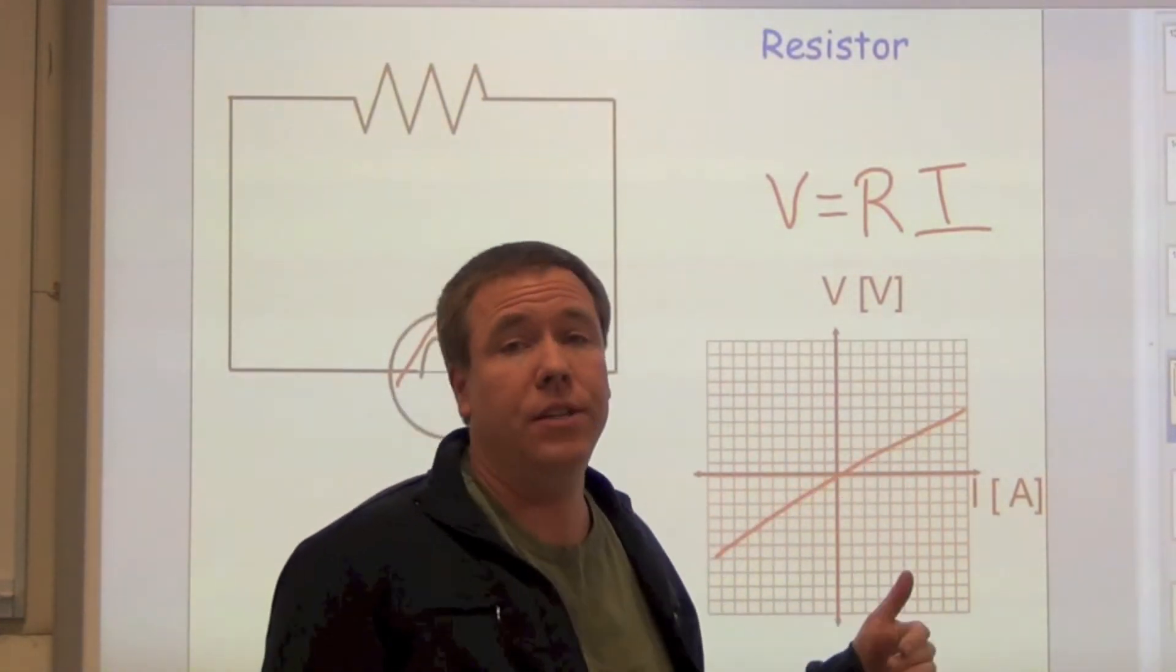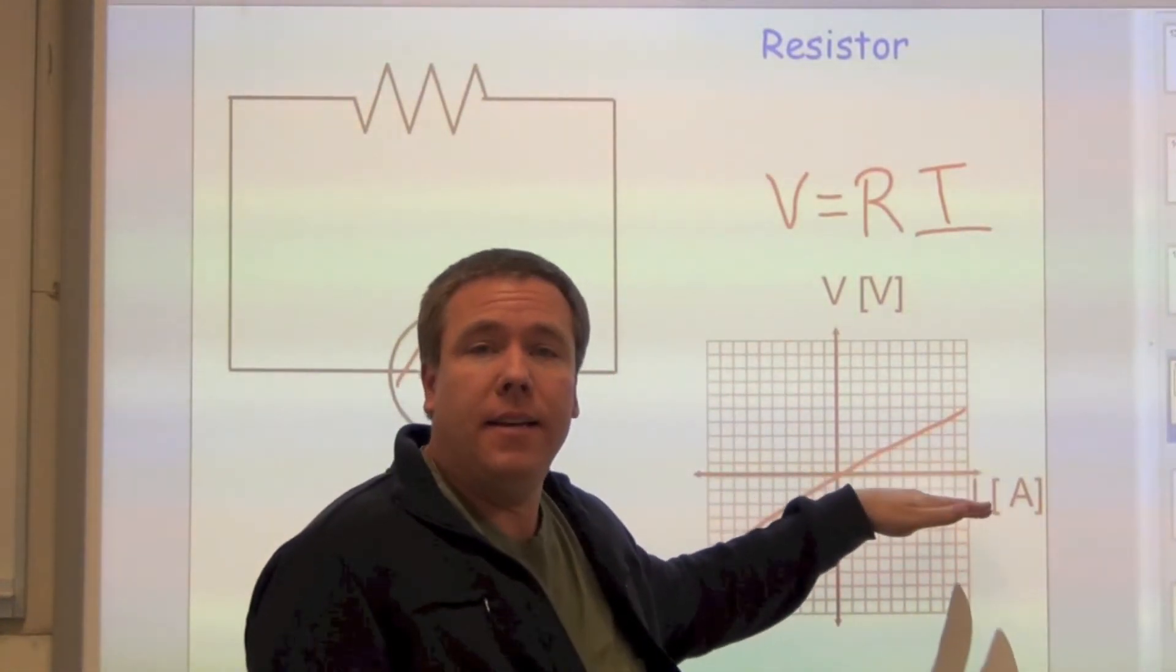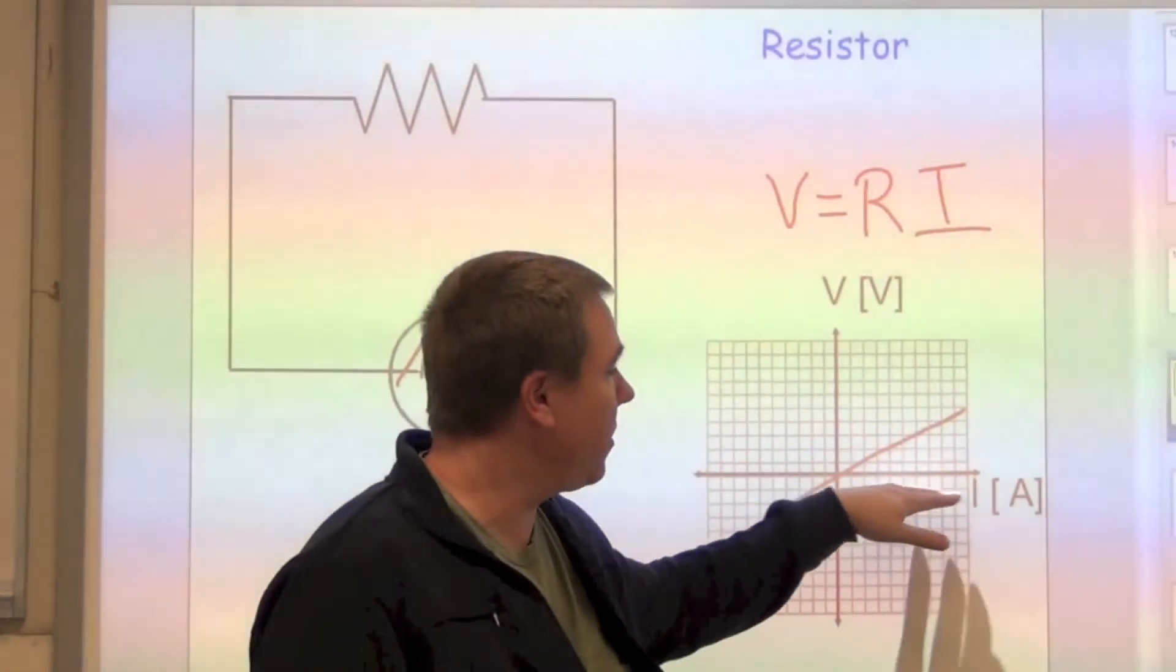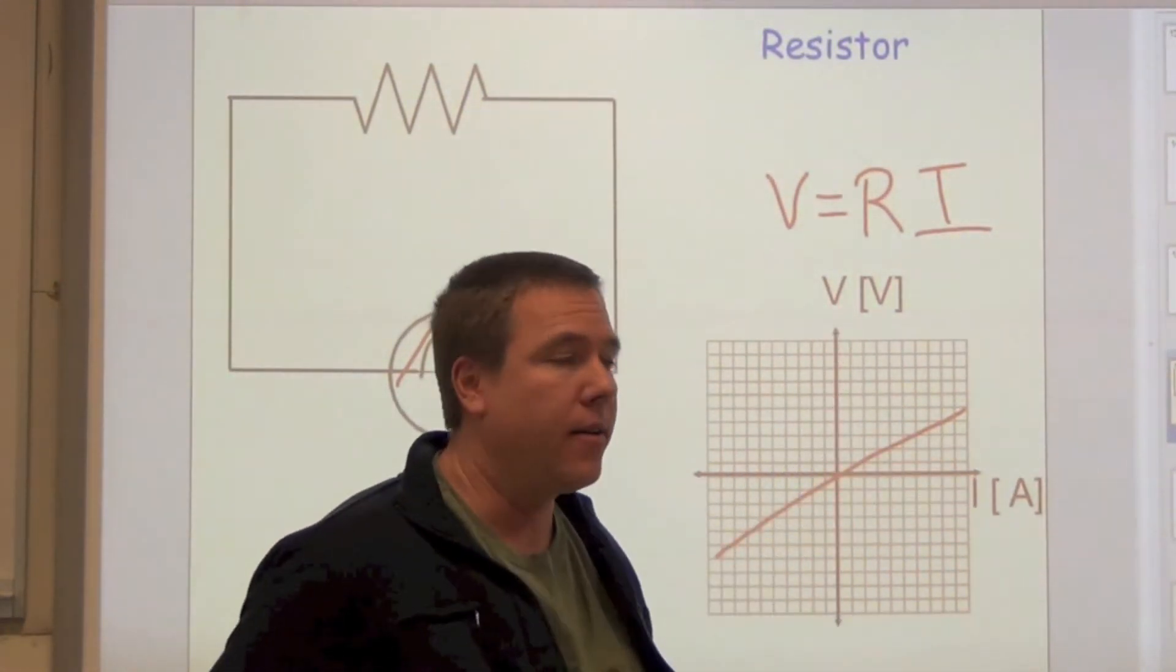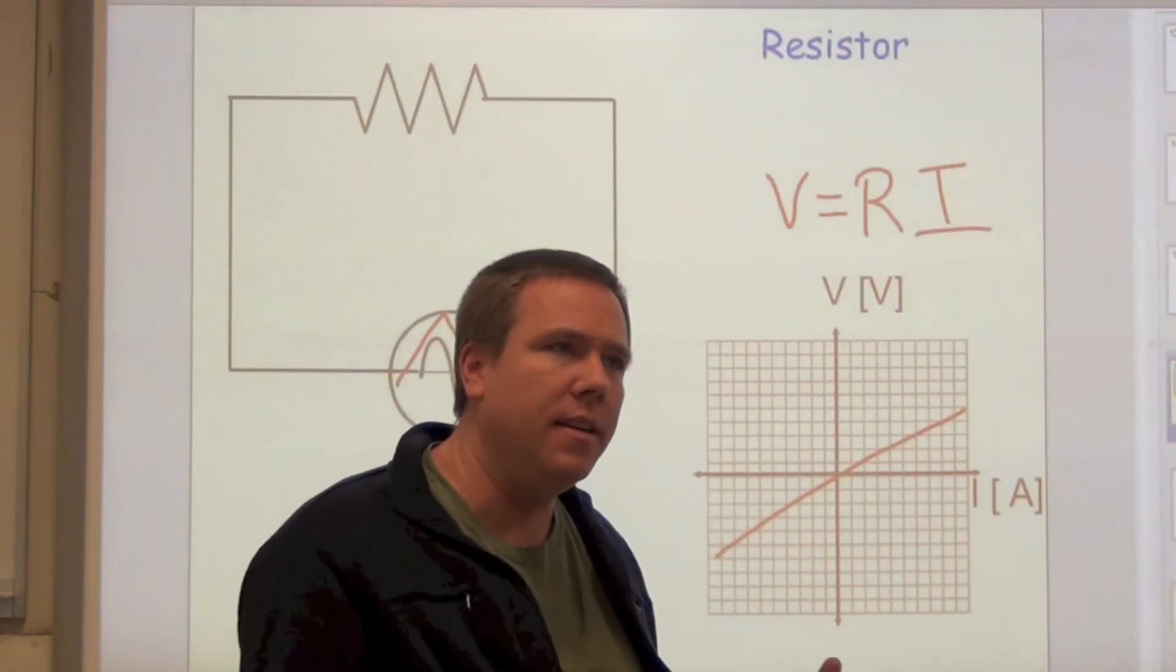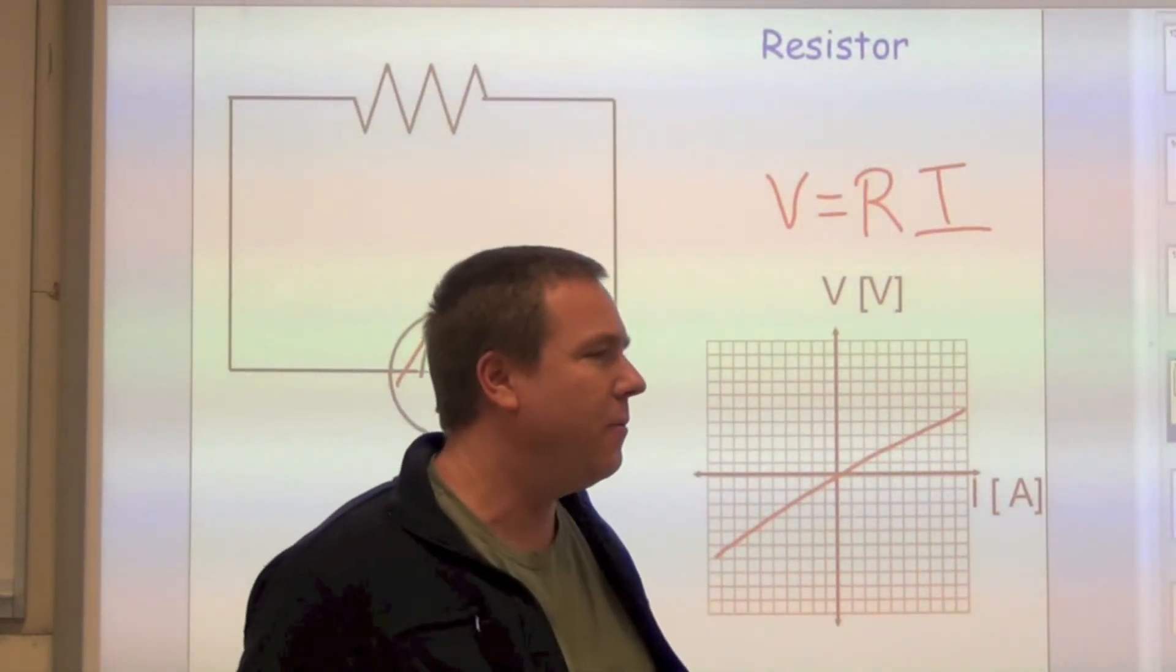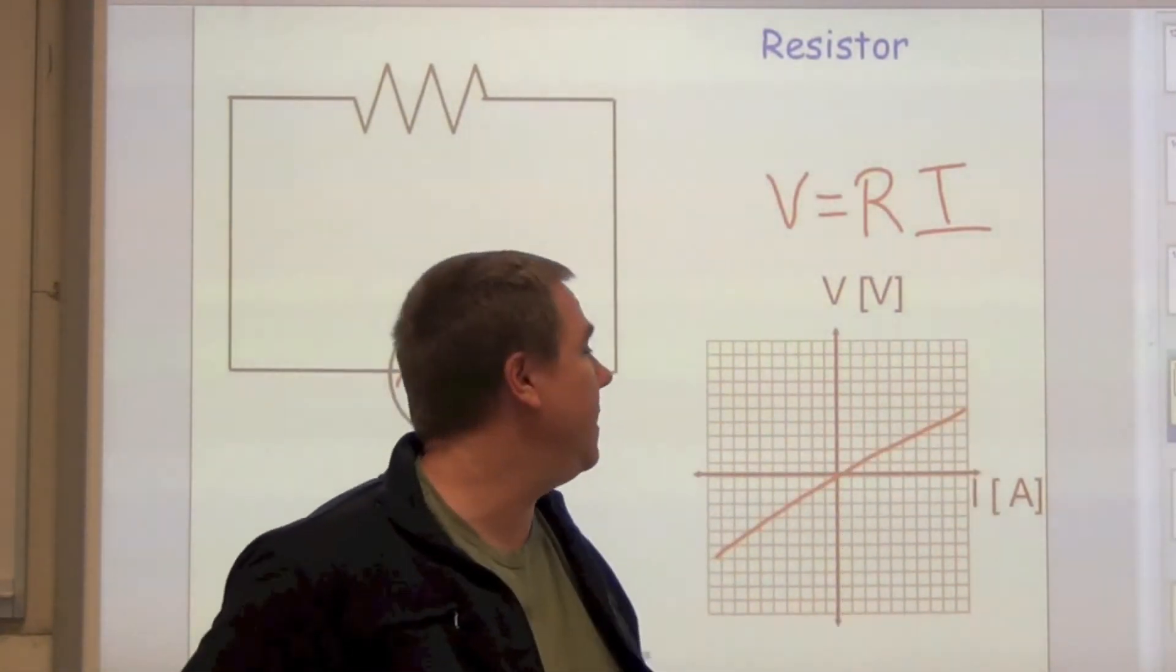It is a function. It shows for every independent value for current, there's one and only one voltage that produces that current. I know that word produces—I just kind of switched the dependency and independency. But we plotted it this way, voltage versus current, so that the slope is simply resistance.